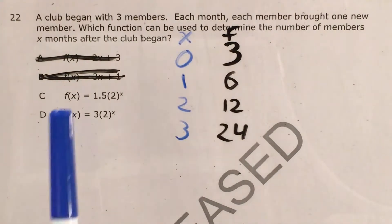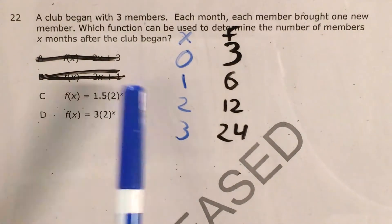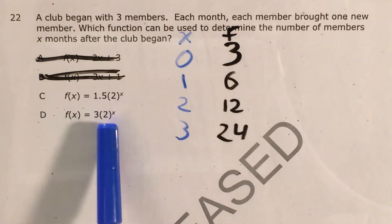So that leaves us with just either choice C or choice D. It's either one and a half times two to the x or three times two to the x.